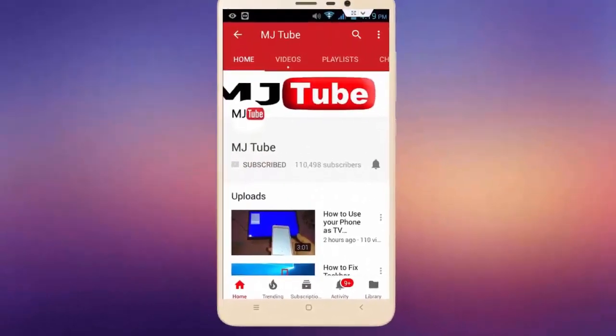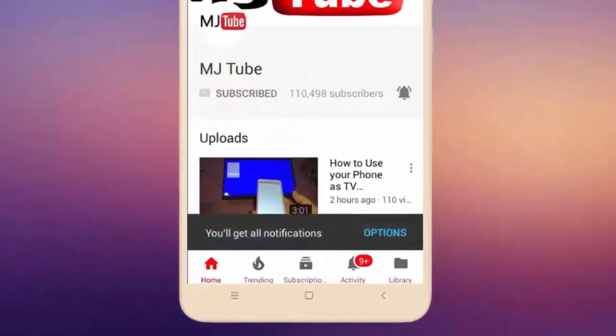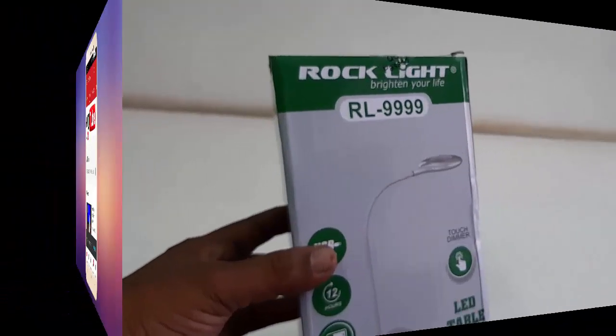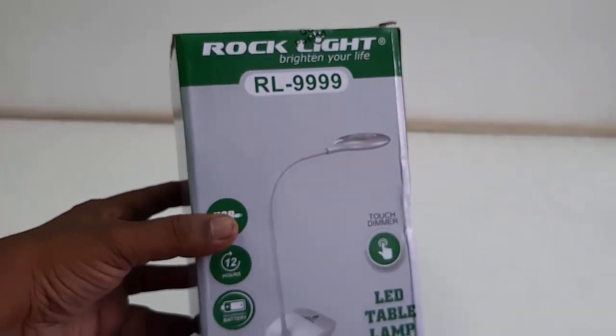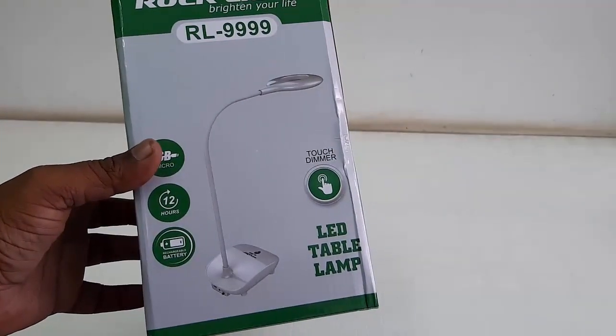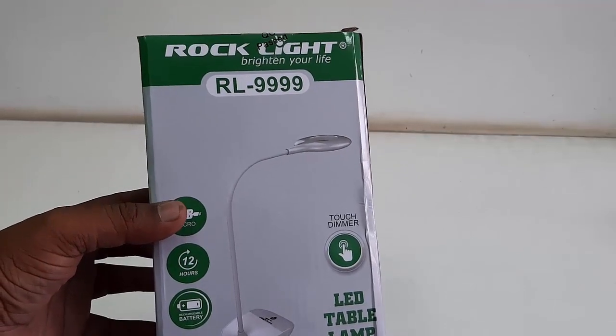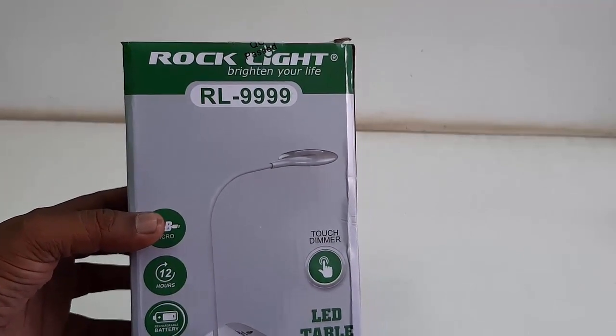Do subscribe to MJ Tube and hit the bell icon for latest videos. Hey guys, welcome back again, I am MJ. Today I'll be doing a quick review and unboxing of this LED table lamp from Rock Light, model number RL-9999.